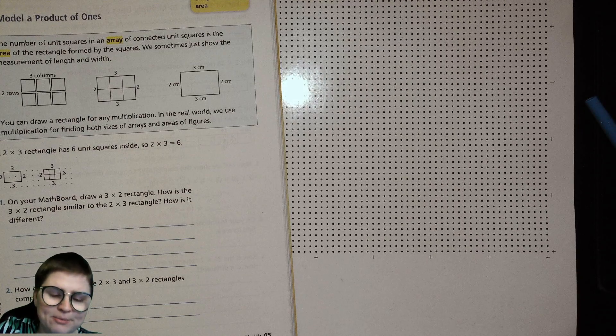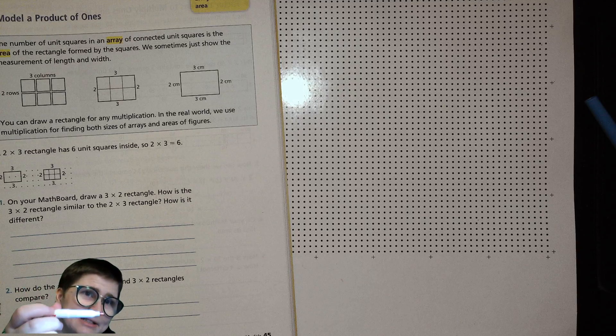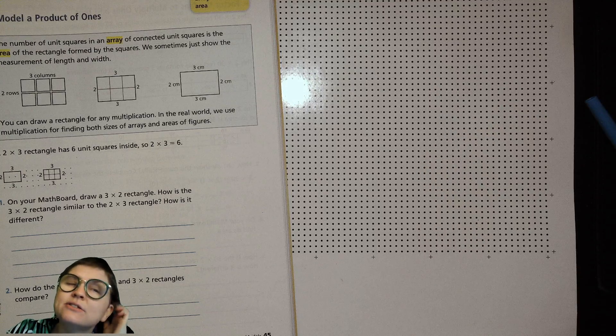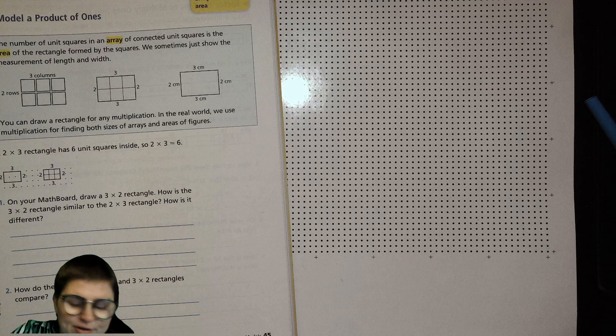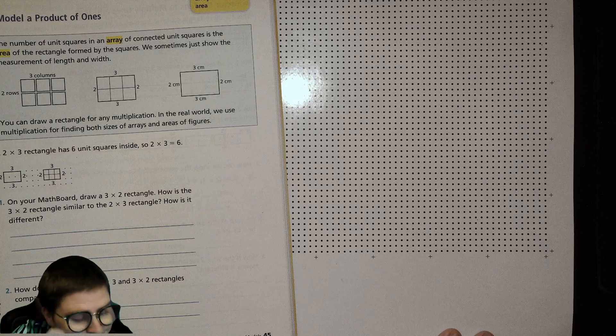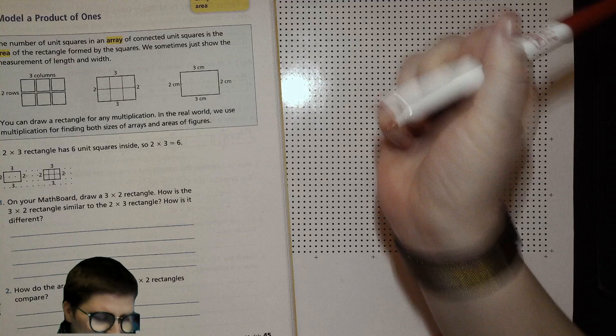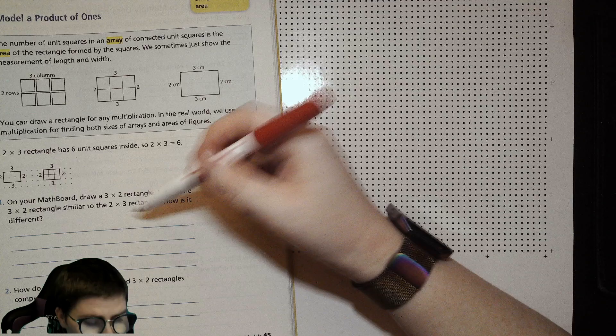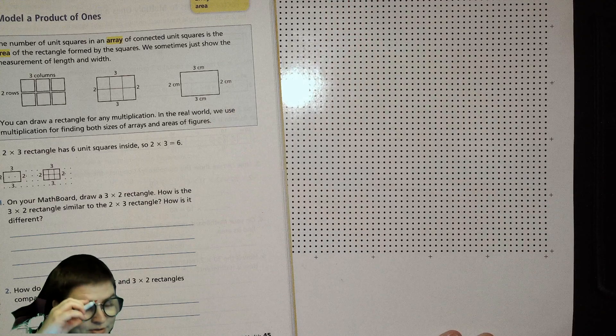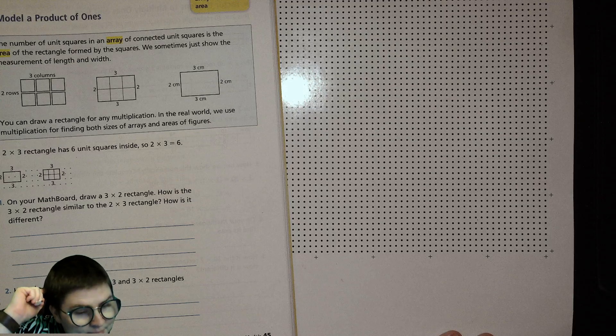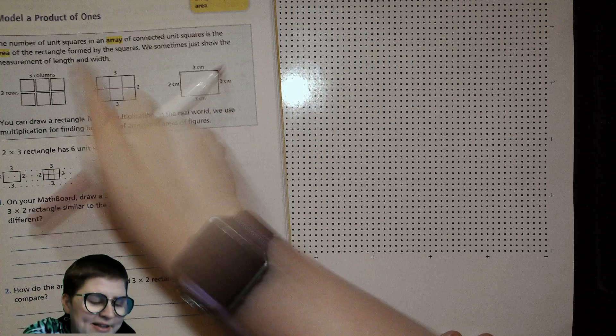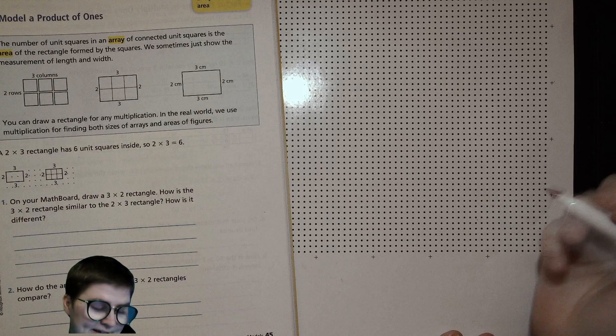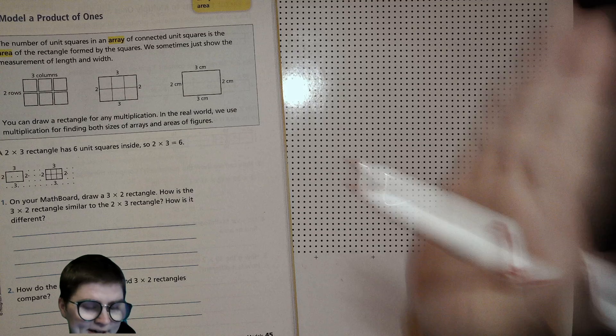If you do have a skinny marker, it's helpful. But you can still do it if you have a bigger marker. So draw a three by two rectangle. How is the three by two rectangle similar to the two by three rectangle? How is it different? We usually say length and width in order. So this is two long and three wide. So we'll do one that is three long and two wide.